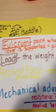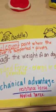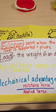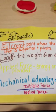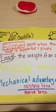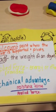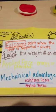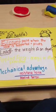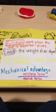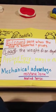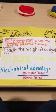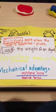The fulcrum is the point where the lever is supported by pivots. The load is the weight of an object. Applied force is the energy or effort provided. Mechanical advantage is the resistance force over applied force.